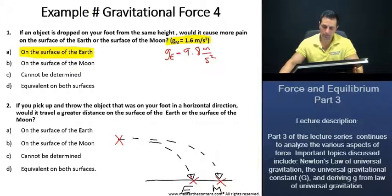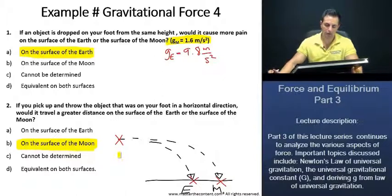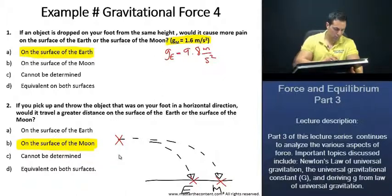Thus, it's safe to presume that the greater distance is going to be on the Moon. Greater distance on the Moon, that's B. We can safely assume that B is our answer there. Let's now move on and do another example.